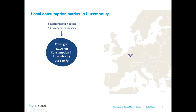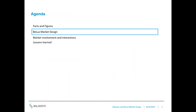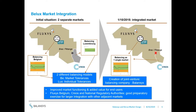Luxembourg is not really a transit country — it is more a local consumption market. They had two interconnection points, one coming from Belgium and one coming from Germany, and in total 0.8 BCM per year of local consumption. So in the total BELUX area, we have around 18 BCM per year of total consumption.